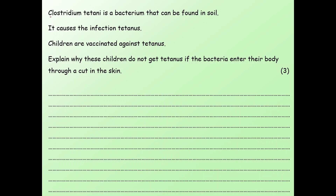So let's have a look at what they've told us. Clostridium tetani — that's quite a complicated Latin name for the bacterium. You wouldn't have come across that before, but they do this quite often. They'll give you an unfamiliar bacterium, an unfamiliar infection, and expect you to apply your knowledge. It then goes on to explain that it is a bacterium that causes an infection. It says that children are vaccinated against it, so actually what we're now looking at is a question about vaccinations.